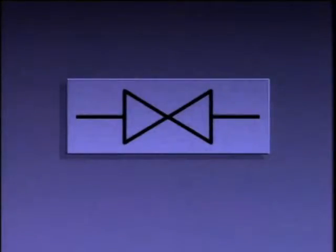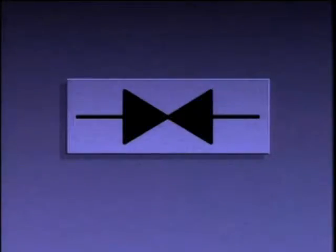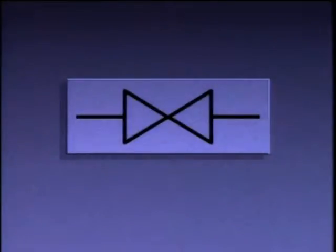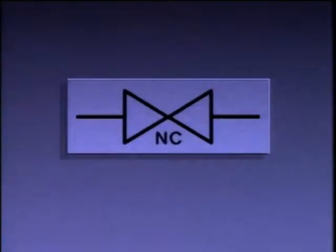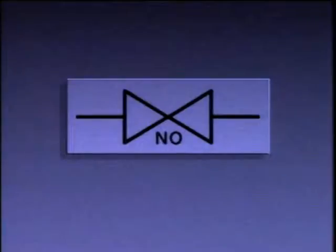If the symbol looks a certain way, it means the valve is normally open in the system. If the symbol is filled in, it means the valve is normally closed. Other types of notation may also be used to show valve positions, such as the letters NC for normally closed and NO for normally open.